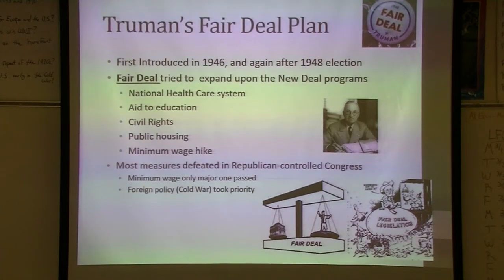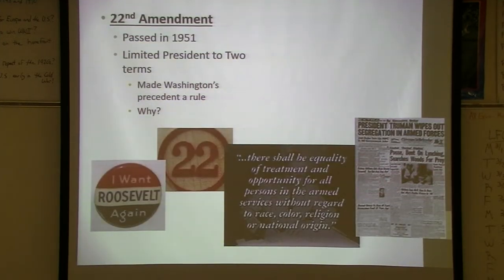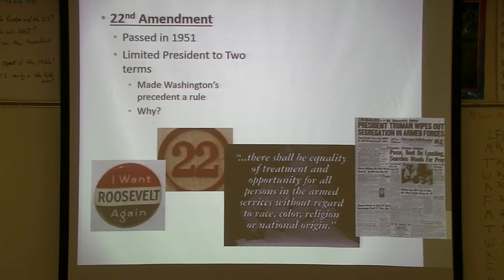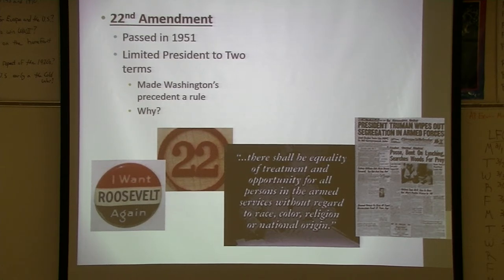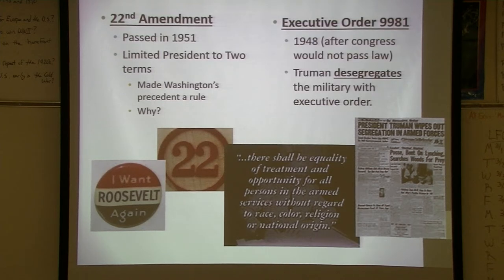The 22nd Amendment was passed in 1951. Straightforward — it limits the president to two terms. George Washington had an unofficial rule that every president upheld until FDR, who won a second and third term. We made it now an official rule.